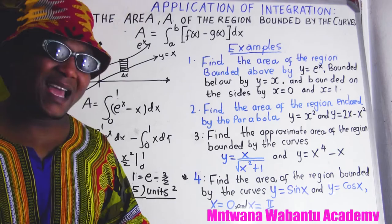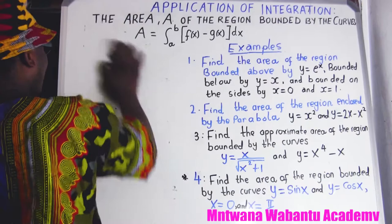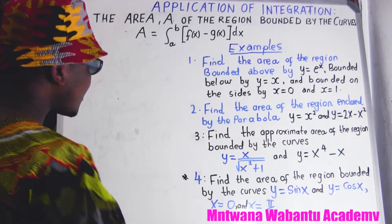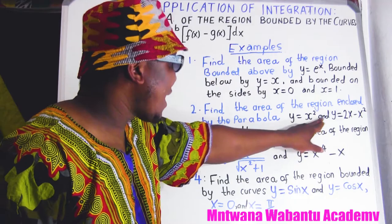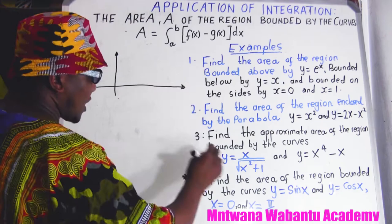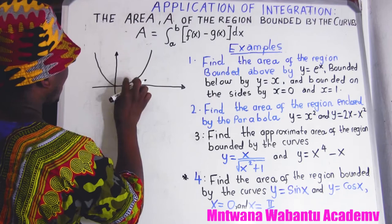Now let's go to question number two. Make sure you watch until the last question because it's the most important — it involves absolute values. Question two: find the area of the region enclosed by the parabola y equals x squared and y equals 2x minus x squared. They did not give us the starting and final points, so we need to find the intersection.